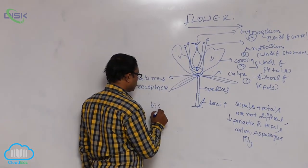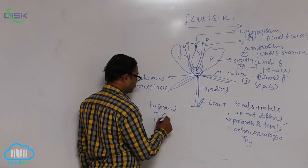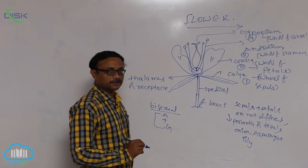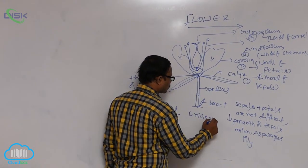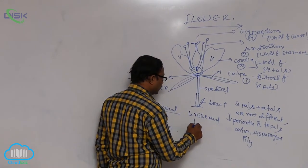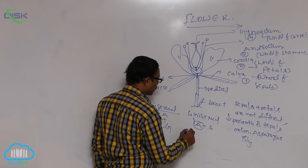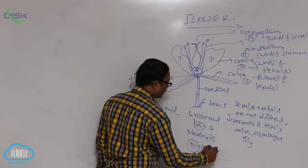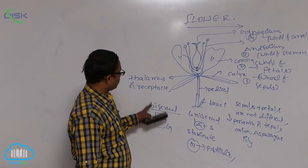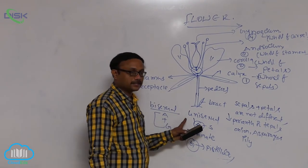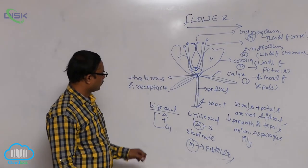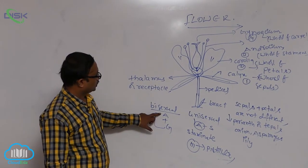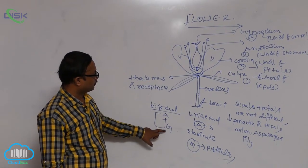Flowers are two types based on sexuality: bisexual flowers and unisexual flowers. Bisexual flowers have both androecium and gynoecium in a single flower. Unisexual flowers have either only androecium, known as staminate flowers, or only gynoecium, known as pistillate flowers.